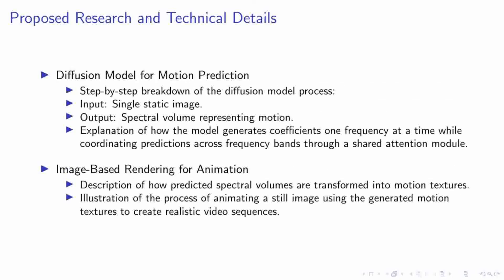Delving deeper into our approach, the diffusion model for motion prediction takes a single static image as input and outputs a spectral volume that encapsulates the motion dynamics of the scene. The process involves generating coefficients for each frequency, one at a time, while a shared attention module coordinates these predictions across different frequency bands, ensuring that the motion dynamics are consistent and realistic across the entire image. Once we have the spectral volume, it is transformed into a motion texture representing long-range, per-pixel motion trajectories. We then use these motion textures to animate the original still image, creating realistic video sequences that faithfully mimic natural motions such as the swaying of trees or the flickering of candle flames.